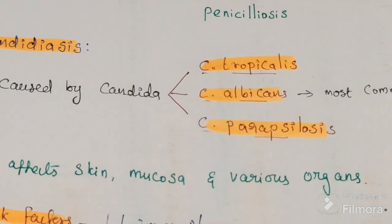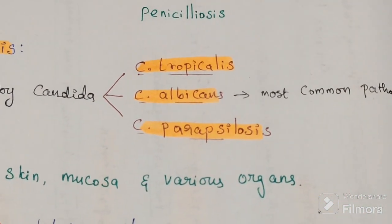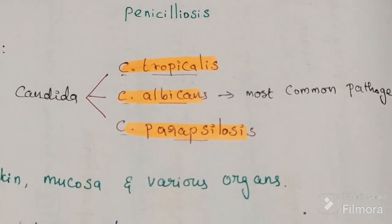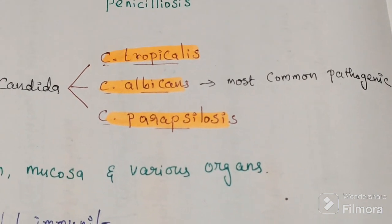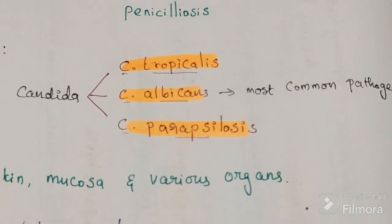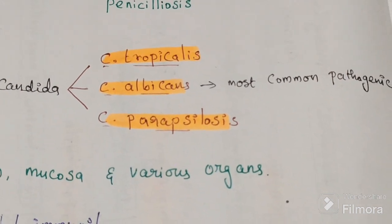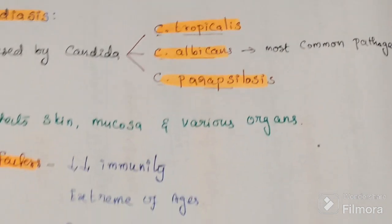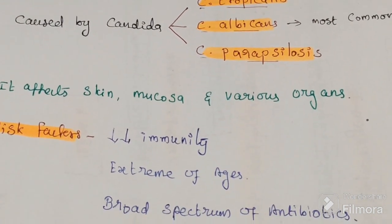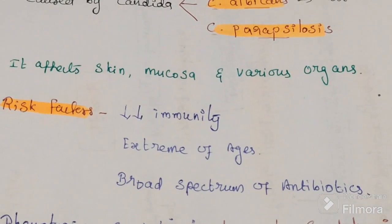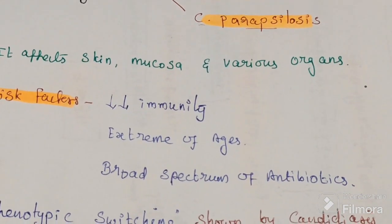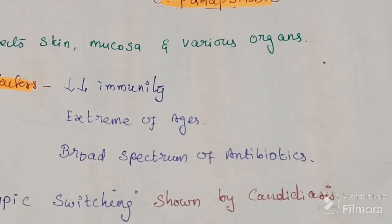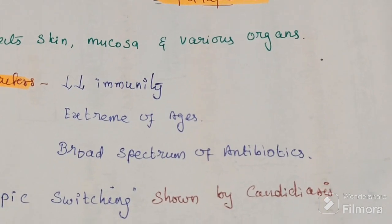First is candidiasis. Candida is caused by three species: Candida tropicalis, Candida albicans, and Candida parapsilosis. Among the three species, Candida albicans is the most pathogenic one. It affects skin, mucosa, and various organs. Risk factors include low immunity, extremes of age, and broad-spectrum antibiotic use, which can easily cause candidiasis.